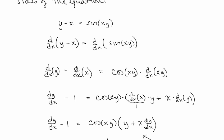We copy down the cosine xy, and now we need the derivative of the product x times y, so we use the product rule. We have the derivative of the first times the second, plus the first times the derivative of the second. The derivative with respect to x of x is just 1, and the derivative with respect to x of y is dy/dx.